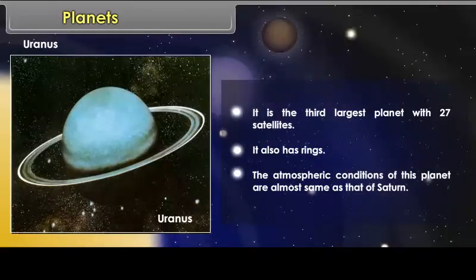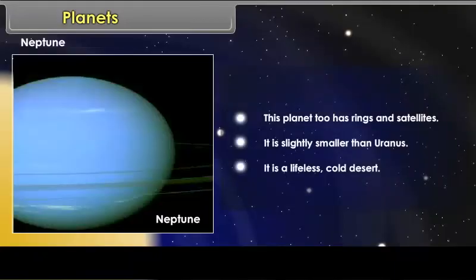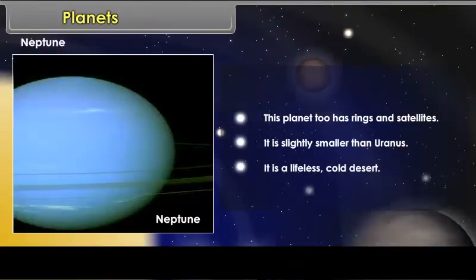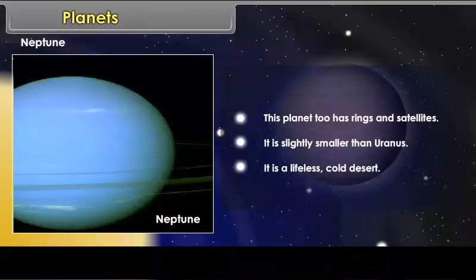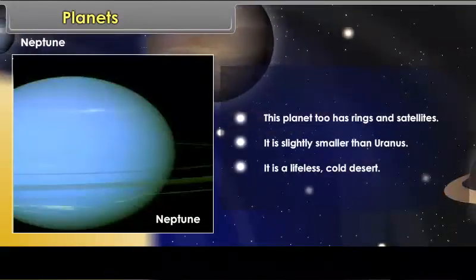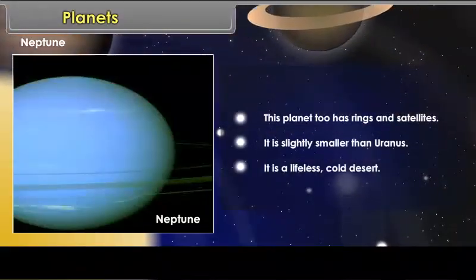Neptune. This planet too has rings and satellites. It is slightly smaller than Uranus. It is a lifeless, cold desert.